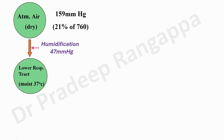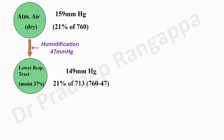As we breathe in air and oxygen, there is a humidification process that happens. Our nasal cavity and throat have this humidification process, for which we need to add in the water vapor pressure, which is 47 mmHg. The oxygen level starts coming down because when you subtract 47 mmHg from 760 mmHg and multiply by 0.21, giving 0.21 × 713, the oxygen level at the lower respiratory tract or isothermic point is around 149 mmHg.